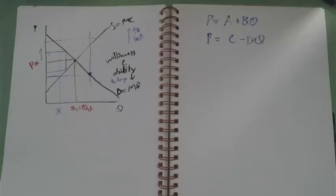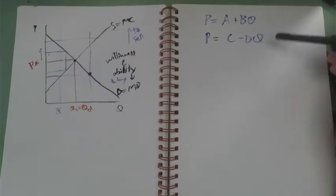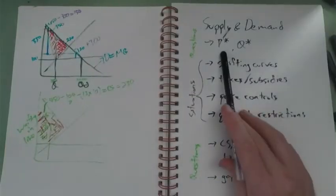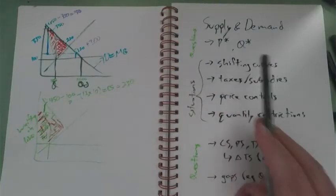All right, I'm going to start with just the very simplest case. We have some supply and demand system, and we want to find where we are in equilibrium. What's P star? What's Q star?